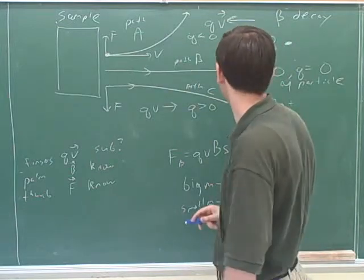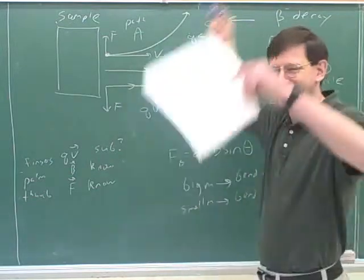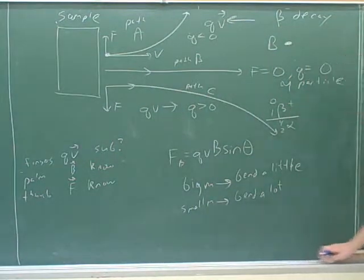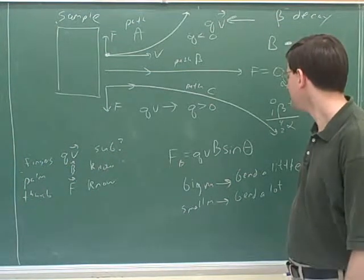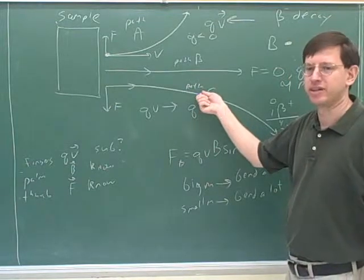So the beta particle here is a whole lot of bending. So C is alpha because it's big? All right. Looks like you're jumping ahead. That's right. Good. So who's big? Alpha. Yeah. So is this bending a lot or a little?